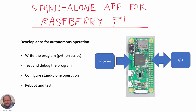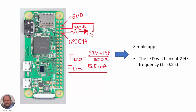We need to execute our program as another task of the operating system. In order to develop an app for autonomous operation, we have to follow four steps: write the program — we are going to use Python for this — then test and debug the program, next configure the standalone operation, and finally reboot our system and test that everything is operating correctly.